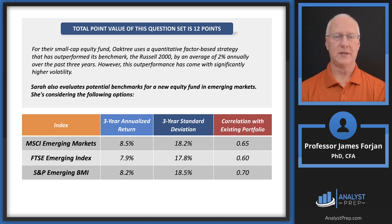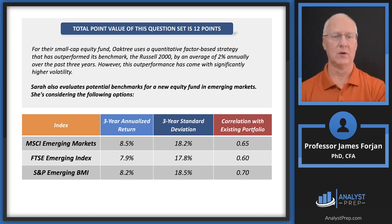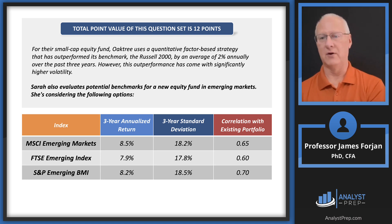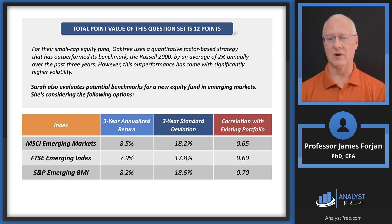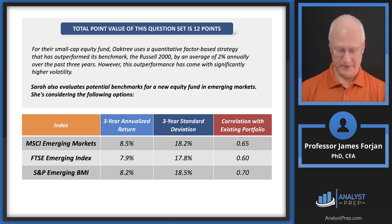We're thinking about potential benchmarks for a new equity fund in emerging markets, and we'll probably have to pick one of three. What jumps out initially? The MSCI has the highest return, the middle correlation coefficient, and the middle standard deviation. The S&P Emerging has less return but more risk and a higher correlation. Looking at the top and the bottom — the MSCI and the BMI — one of those is inefficient. I'll let you figure that out before we get to the answers.